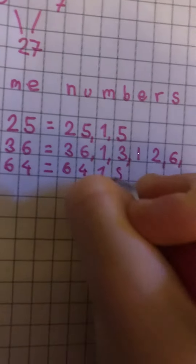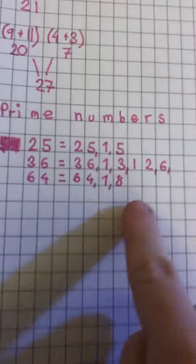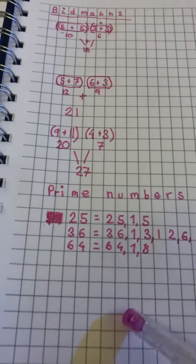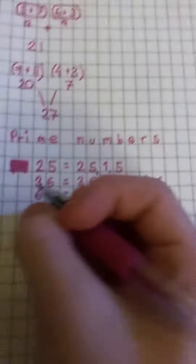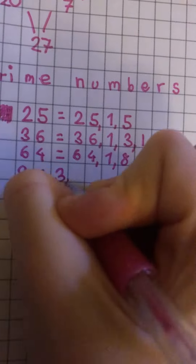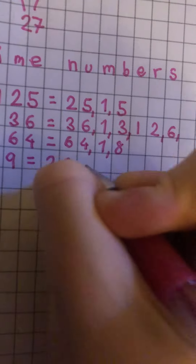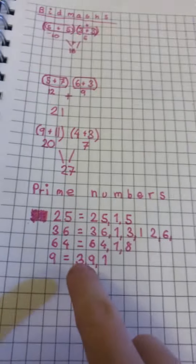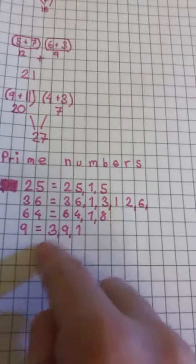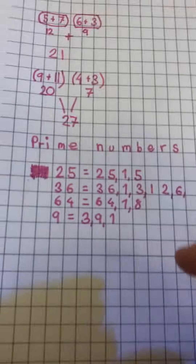You could also have 64 because you have 64, one, and eight, because eight times eight is 64. You could also have nine — that's a single number because you have three, nine, and one, because three times three is nine.